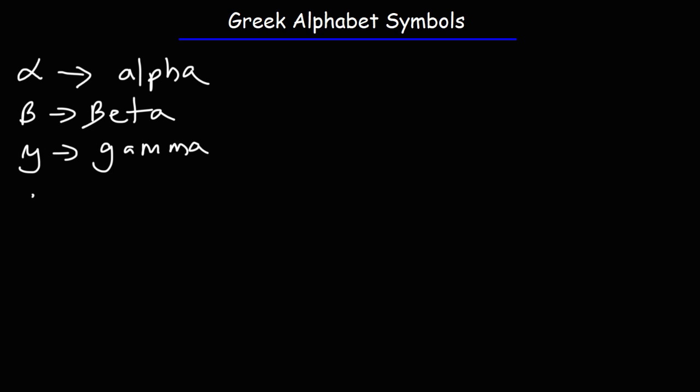After that you have the symbol delta which can be represented in any of these two forms. The first one is the lowercase Greek alphabet of delta. The second one, the triangle, is the uppercase. The triangle you'll see this in calculus, this means change.